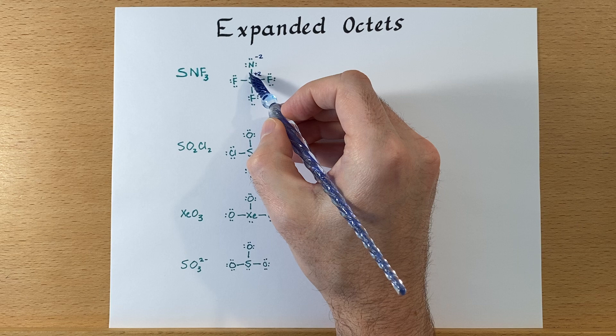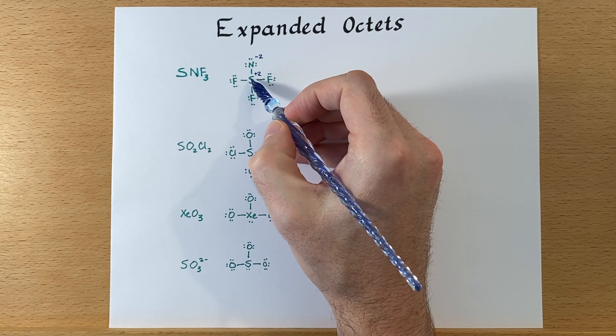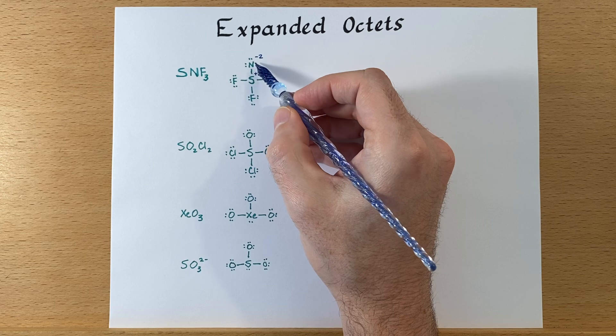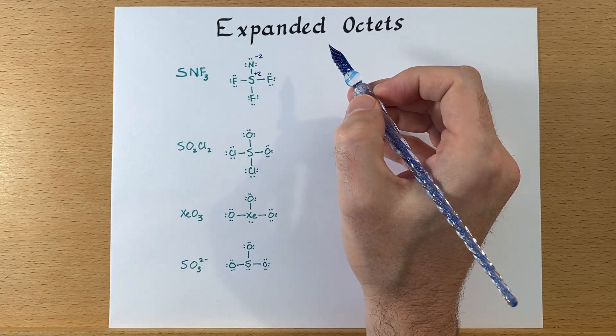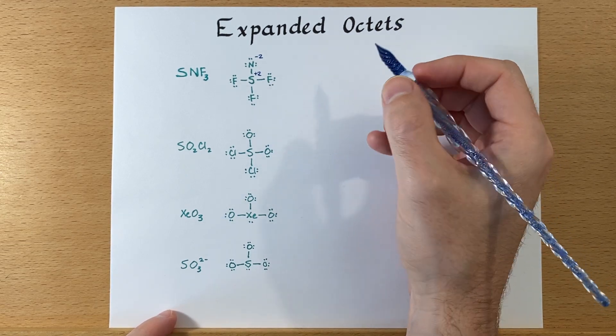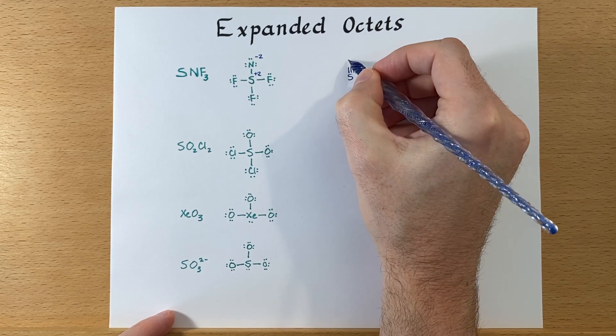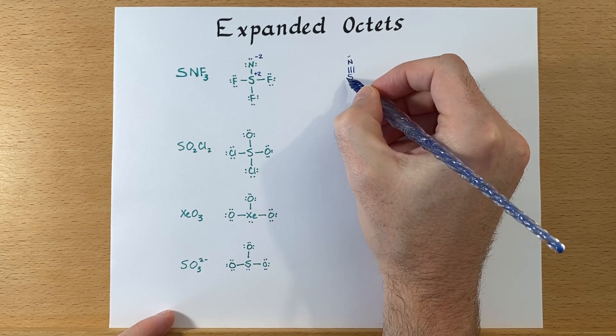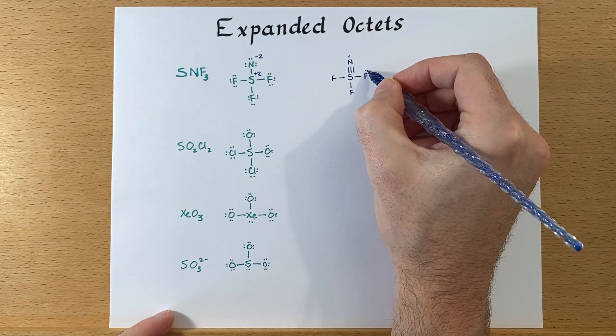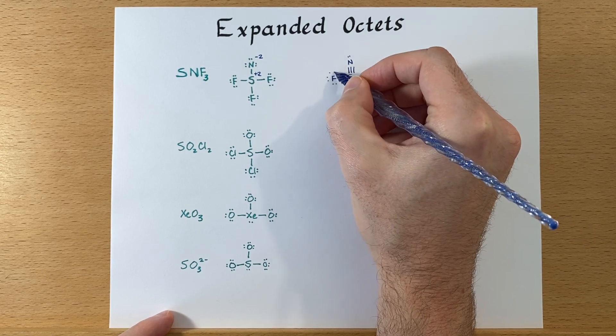If we were to move two of these lone pairs in between and form a triple bond, then we'll be sharing two additional electrons with the sulfur, and we'll still maintain enough electrons around nitrogen to have an octet. Because nitrogen is one of those atoms where octets seem to matter.